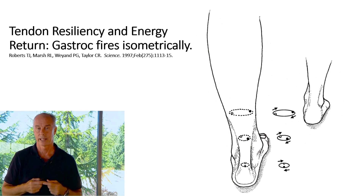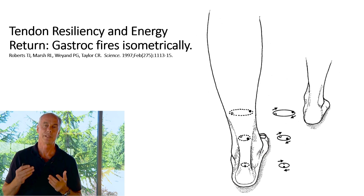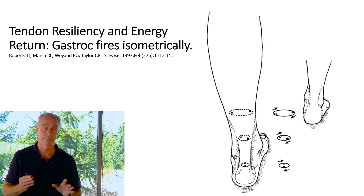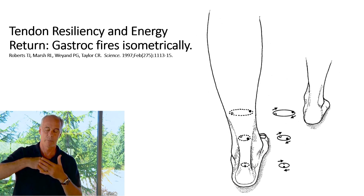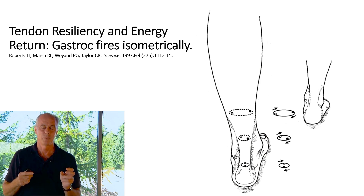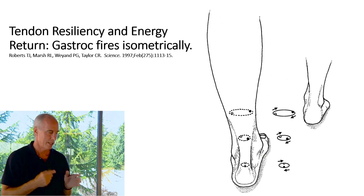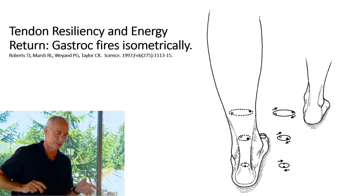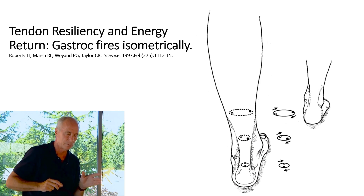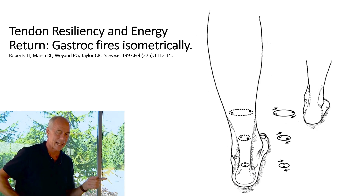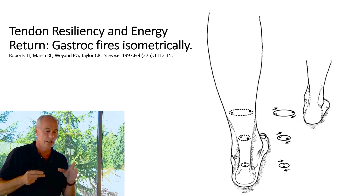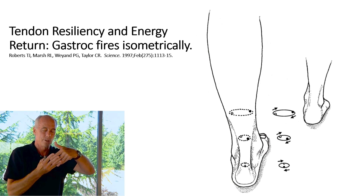Roberts and Wayand put special sensors inside the gastrocnemius of turkeys and put them on treadmills, measuring muscle activity, elongation, and tendon motion. What they discovered — and it applies to humans — is that when running through the gait cycle, as the leg is extending behind you and the ankle is dorsiflexing just before the propulsive period, the central nervous system senses the angle and then just before push-off, it isometrically locks down the contraction. Isometric contractions are extremely efficient — they don't burn calories.